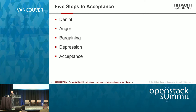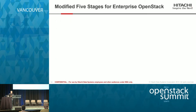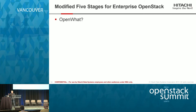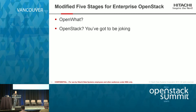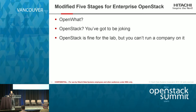I think everyone's familiar with the five stages of acceptance. I'd like to talk about the modified five stages for enterprise OpenStack — and regardless of the size of your company or IT organization, you've experienced all of these. The first tends to be 'Open what?' — people ask what that software is and have never heard of it. After a while the response moves to 'OpenStack? You've got to be kidding. You can't run much real on that.' OpenStack maturity is at the point today where there's a lot of reality to this, but most people who know that are people in this room who do this for a living. So this is where a lot of companies are stuck, in my opinion.